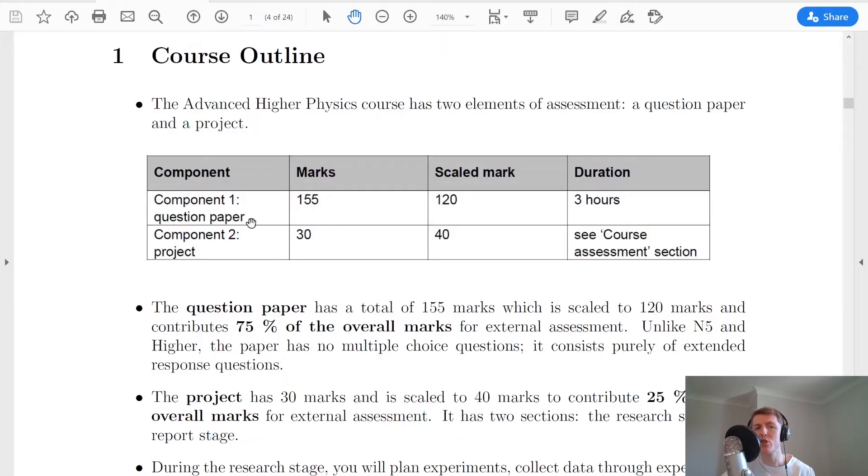Looking at this table here, you can see there are two elements of assessment in the Advanced Higher Physics course: the question paper and the project. Now the question paper is out of 155 marks and has a duration of three hours, and that's probably the longest exam you'll ever sit. The project is out of 30 marks and we'll talk a bit about the duration for that shortly.